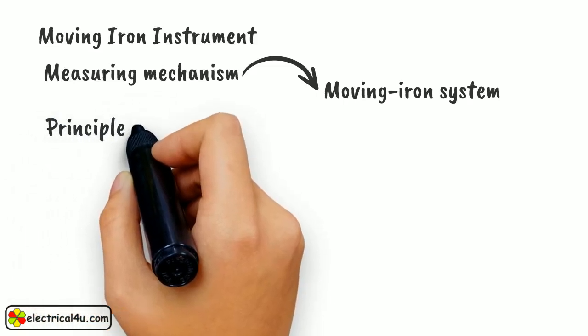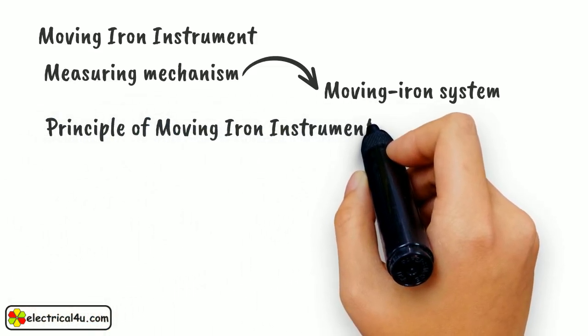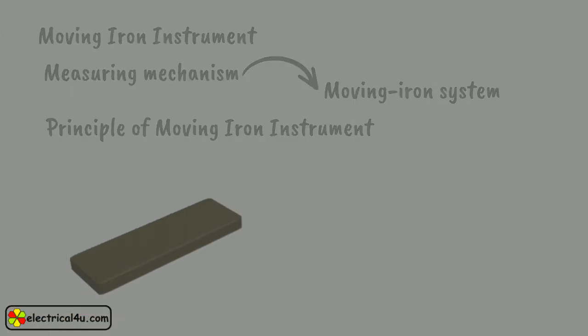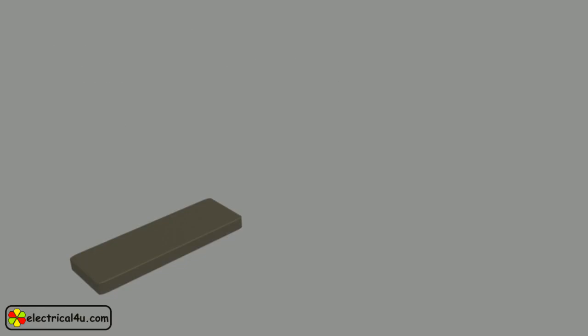Let us discuss the general principle of a moving iron instrument. Let us take a plate or vein of soft iron or of high permeability steel. Let us place this iron vein in a magnetic field produced by this stationary coil.